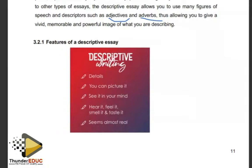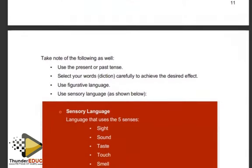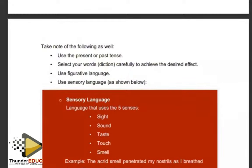Take note of the following when it comes to descriptive writing: use the present or past tense depending on what the question demands; select your words carefully to achieve the desired effect; use figurative language; and use sensory language. Ask yourself: did I use the right tense? Did I use appropriate diction? Is it convincing and emotive enough? Did I use figurative language? Did I use sensory language — sight, sound, taste, touch, smell?